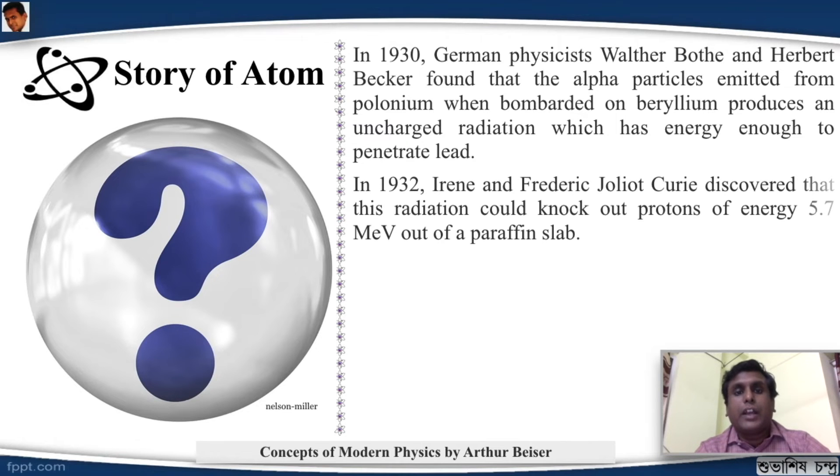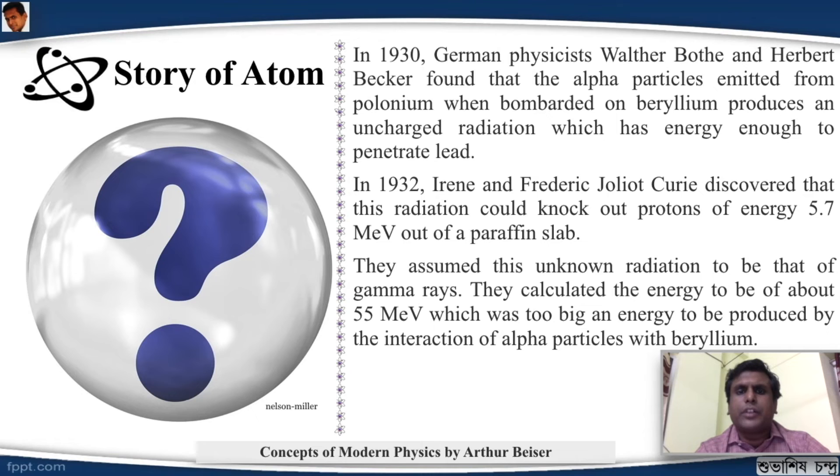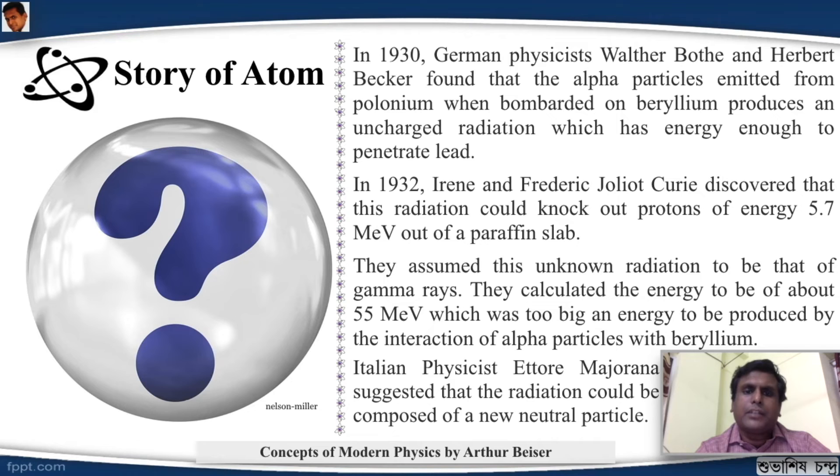In 1932, Irene and Frederick Joliot Curie discovered that the radiation could knock out protons of energy 5.7 MeV out of a paraffin slab. That was a huge energy. They assumed this unknown radiation to be that of gamma rays. So, the gamma rays was supposed to be having energy of about 55 MeV. But that kind of energy was not possible from interaction of alpha particles with beryllium. At that time, a young Italian physicist Ettore Majorana suggested that the radiation could be composed of a new neutral particle. And it was coming from the atom.